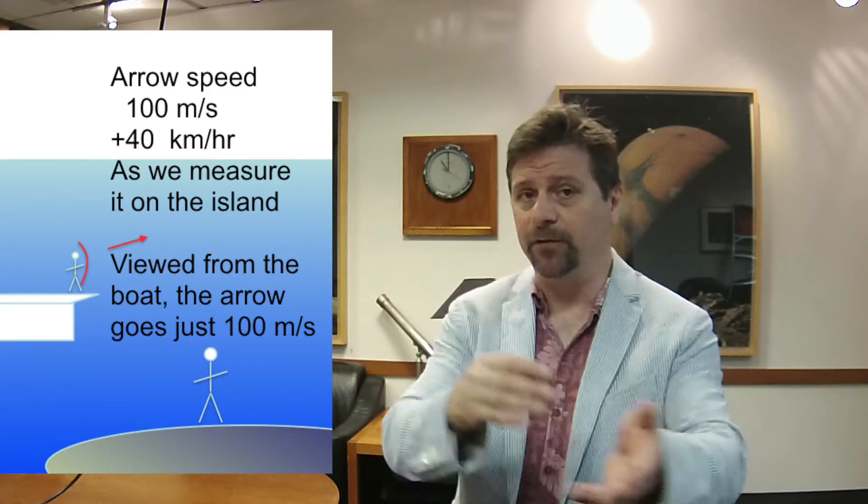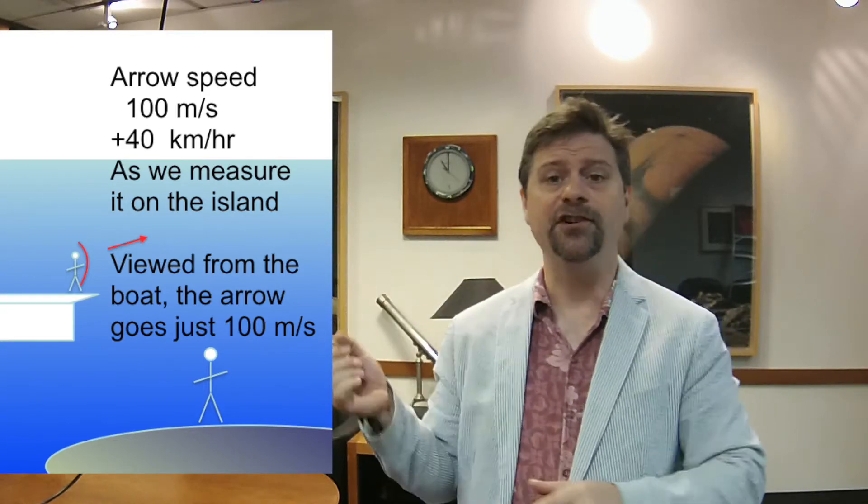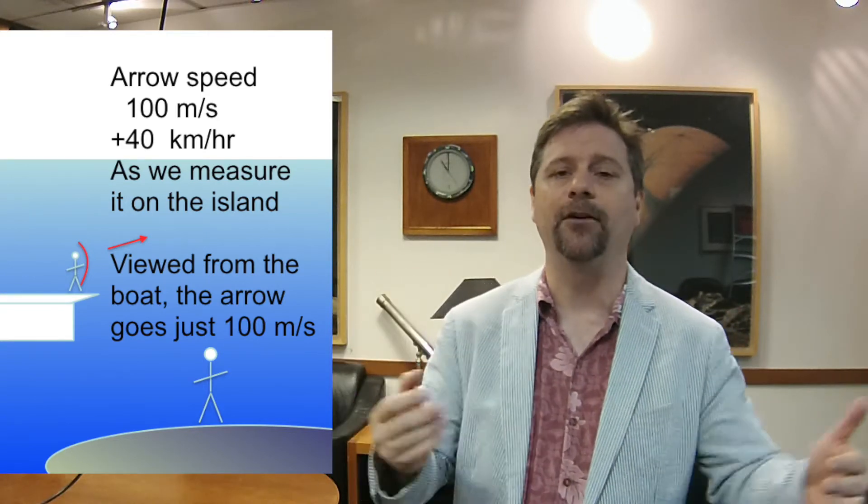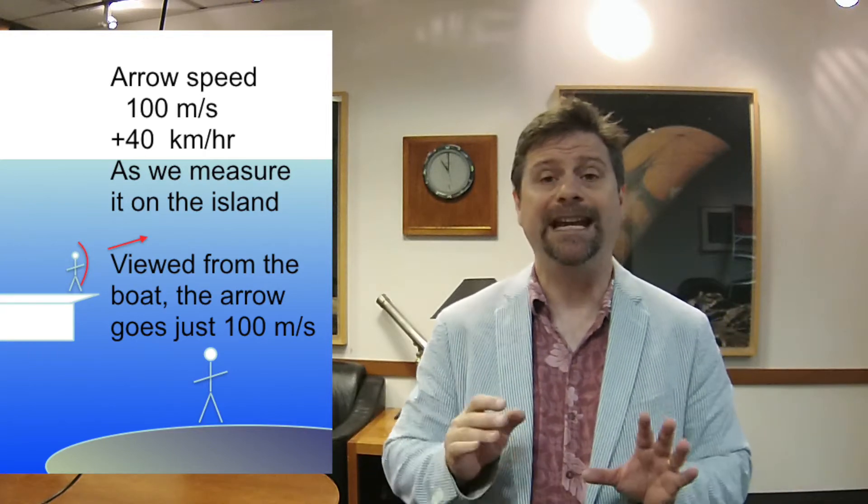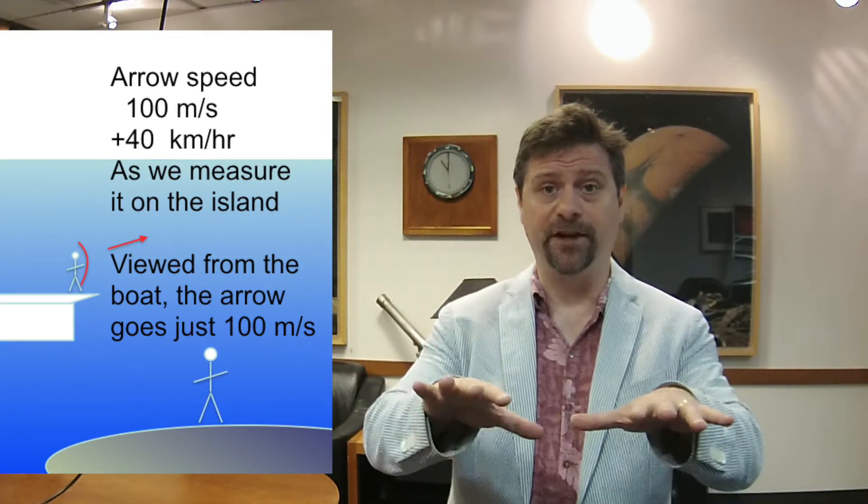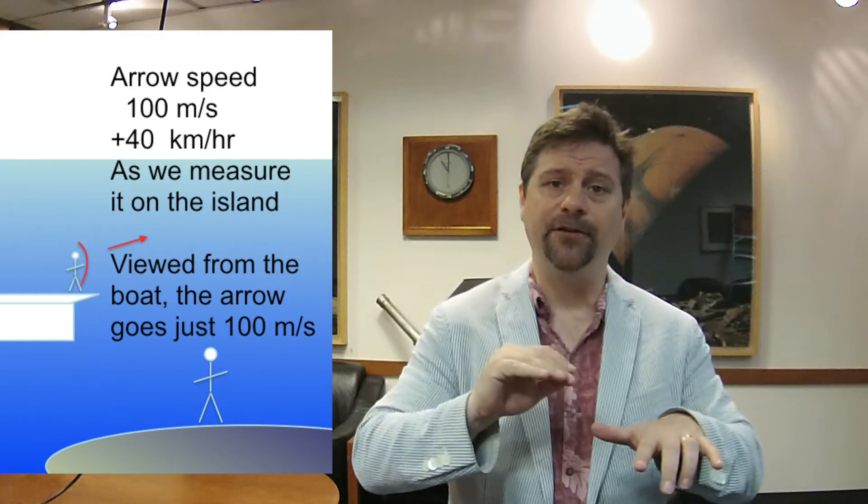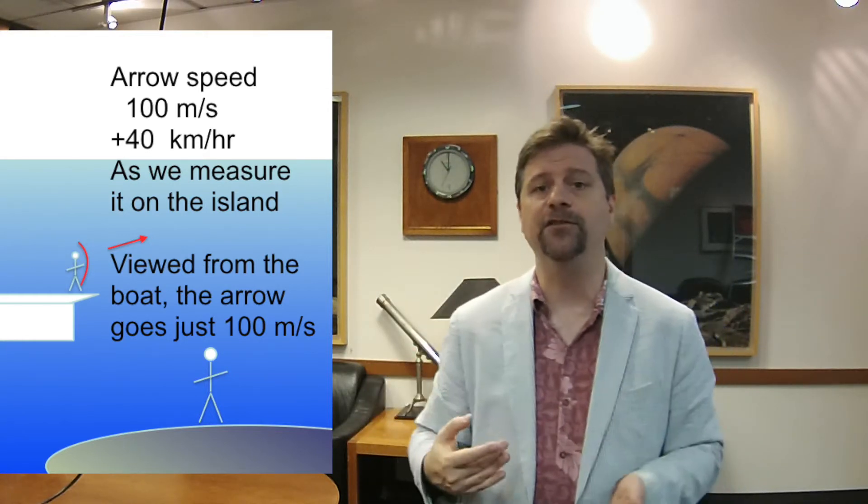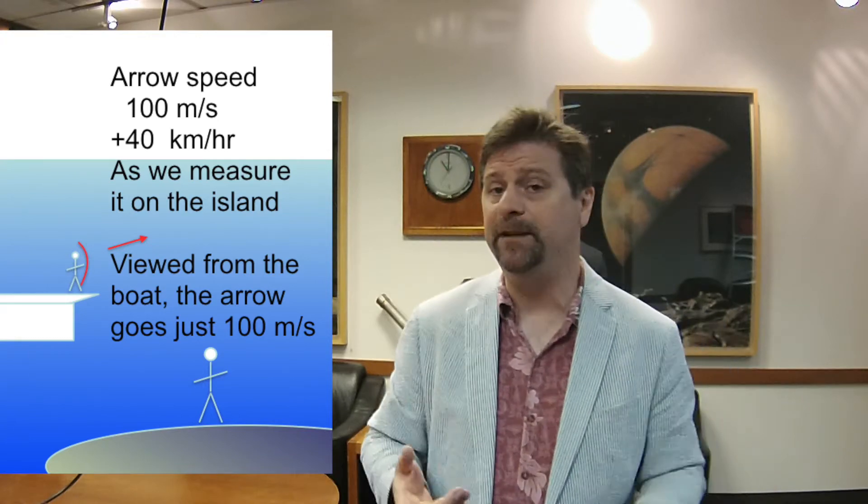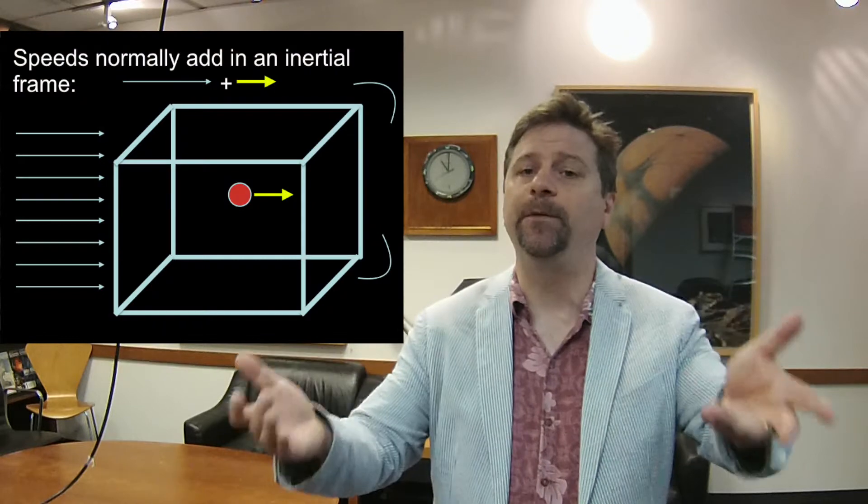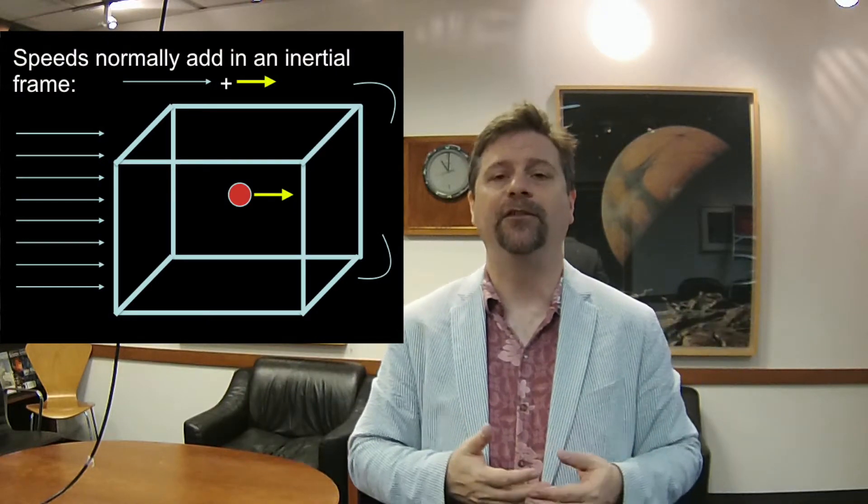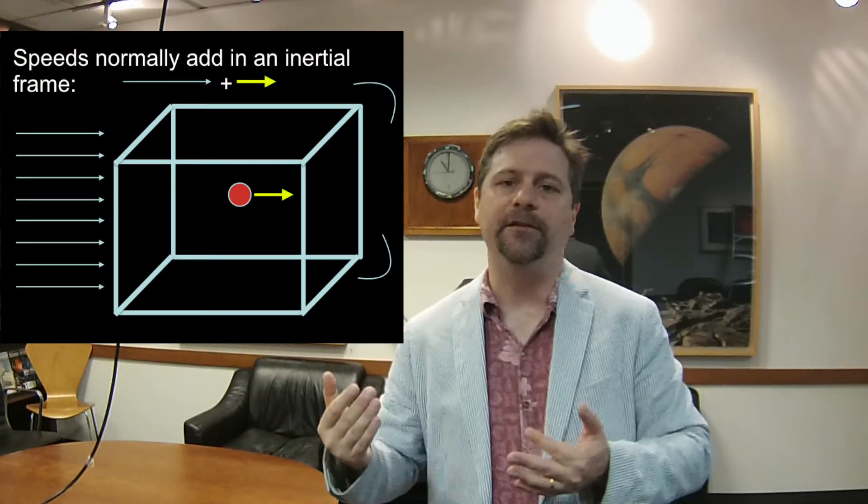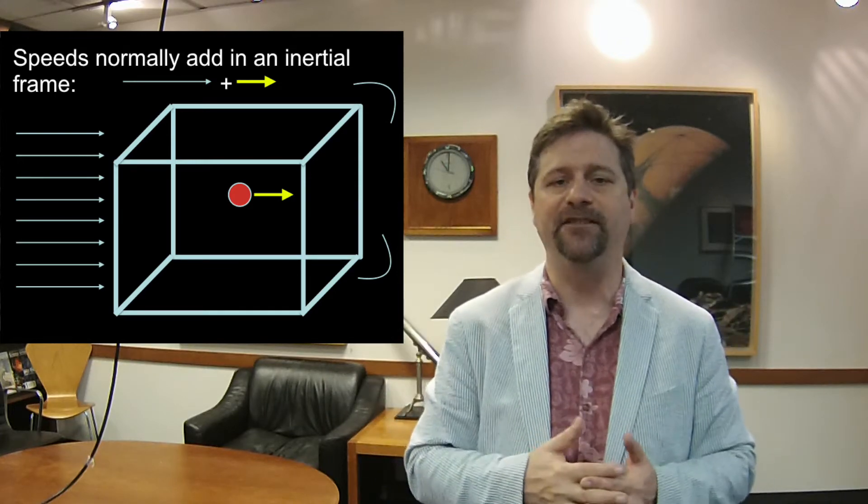If you're firing off the stern, you subtract the speed of the arrow, but that's what we mean by relative speed. For the person on the boat, they see the arrow going 100 meters per second forward, whereas somebody off the boat sees the two speeds add. That's what we mean by Galilean relativity - depending on the observer, the speeds add or subtract. It's relative to the observer.